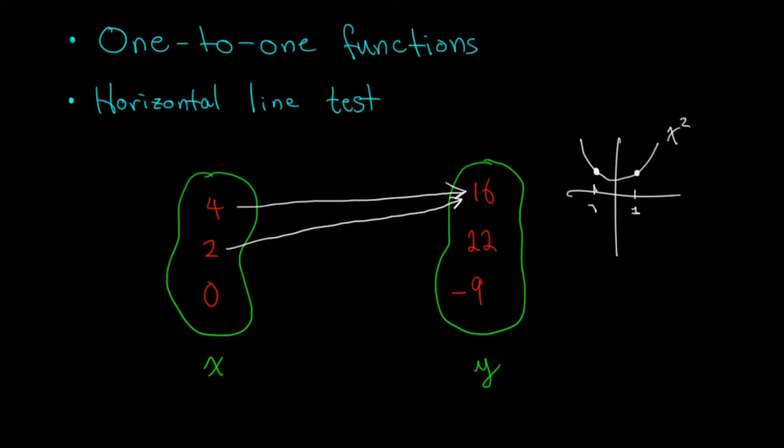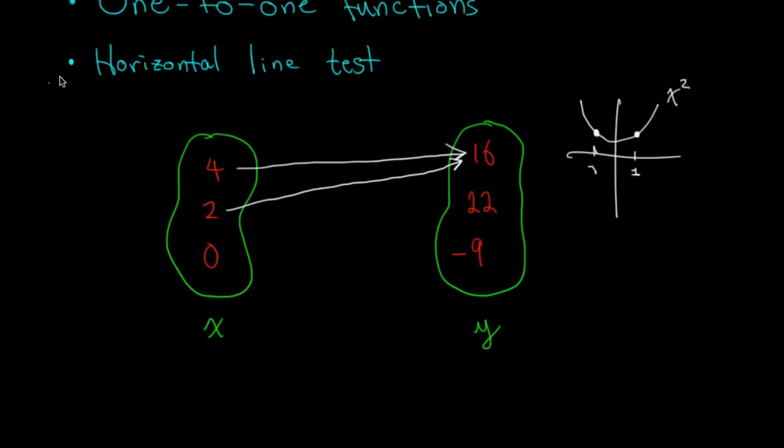However, when you don't have this for a particular function, when every input produces a unique output, never a repeated output, you have what's called a one-to-one function.